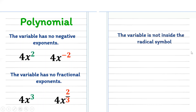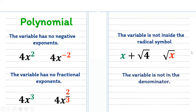Third, the variable is not inside the radical symbol. For example, x plus square root of 4 is a polynomial because x is not inside the radical symbol. However, the square root of x is not a polynomial because variable x is inside the radical symbol. Last but not the least, the variable is not in the denominator. For example, x all over 4 is a polynomial since x is in the numerator. But 2 all over x is not a polynomial because x is in the denominator.